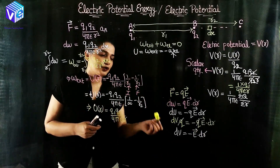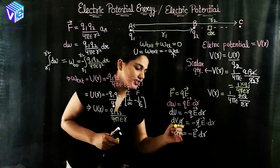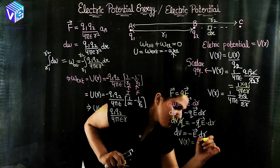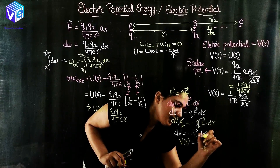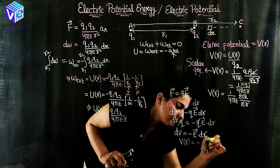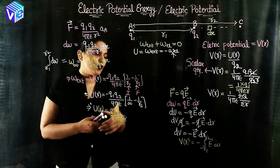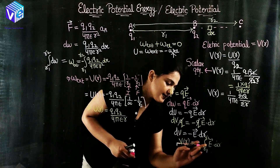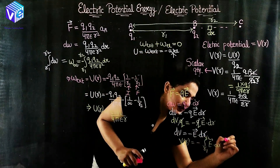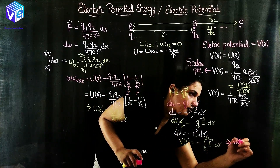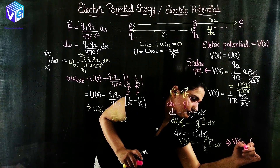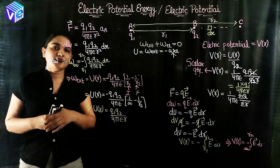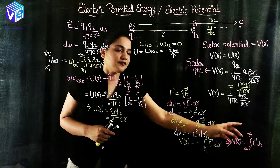This is the small electric potential. If I need to find out the electric potential, I integrate it: V(r) equals negative of the integration of E·dr from infinity up to the given point. This is the relationship between the electric potential and the electric field intensity.